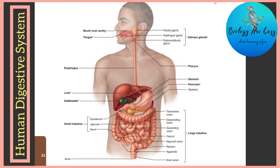Now let's identify the different parts of the digestive system. The alimentary canal starts with the mouth and ends at the anus. The mouth is also known as the oral cavity or buccal cavity. The floor of the buccal cavity has a tongue bearing taste buds, which helps us identify different tastes of food. We have teeth present in both jaws — incisors for biting, canines for tearing flesh, and premolars and molars for grinding food particles.